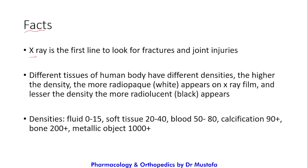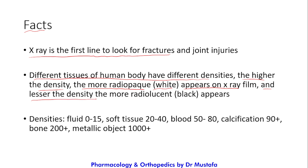The X-ray is the first-line investigation to look for fractures and joint injuries in orthopedic trauma. Different tissues of a human body have different densities. The higher the density, the more radio-opaque — the more white it appears on the X-ray film. The lesser the density, the more radiolucent — which appears black on X-ray.